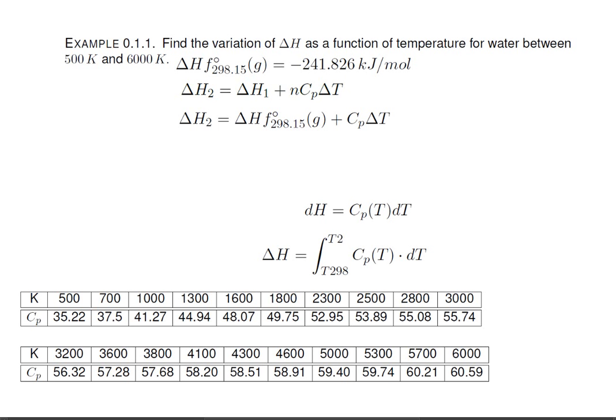From the NIST web book, I was able to find the following values for temperature versus heat capacity. By graphing these values in a spreadsheet program such as Excel or GeoGebra, we can easily fit the data to an order 3 polynomial, which is easy enough to integrate.